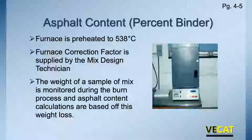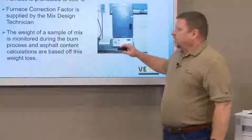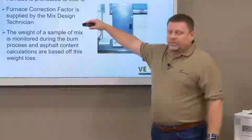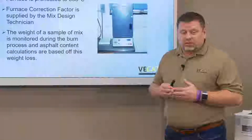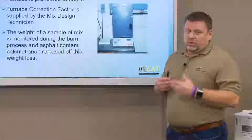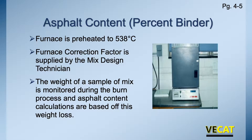The furnace is always preheated at 538 degrees Celsius, which is equivalent to 1,000 degrees Fahrenheit. If you have an aggregate with an extremely high correction factor, there is a process to request burning at a cooler temperature — you need to get with your engineer and your VDOT representative to request permission. The furnace correction factor is supplied by the mix design technician. The weight of the sample is monitored during the burn process, and the asphalt content is based on weight loss — the built-in scale continuously weighs the sample until weight loss becomes constant, then the test stops automatically.